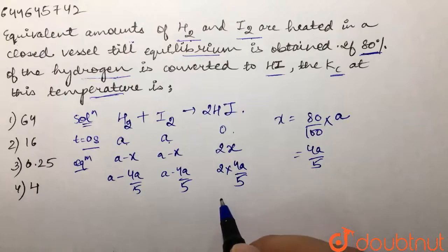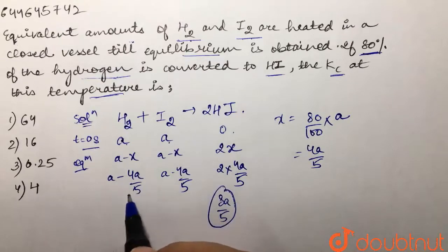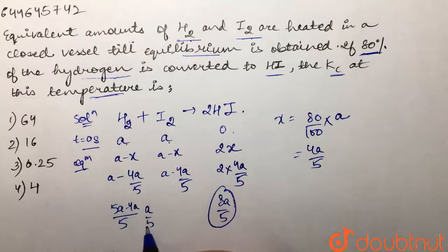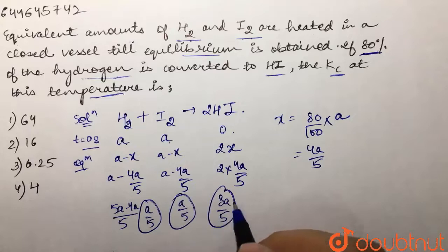Over here it comes out to be 8a/5. And over here, a minus this - let our LCM be 5 - so it would be 5a minus 4a, which equals a/5. This would also similarly be a/5, and this would be 8a/5.